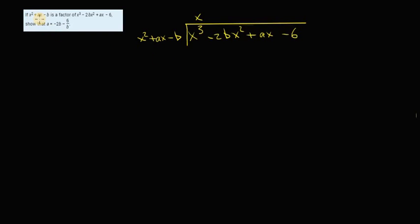The question says that x² + ax - b is a factor of x³ - 2bx² + ax - 6. I'm going to show that a is equal to (-2b - 6)/b.